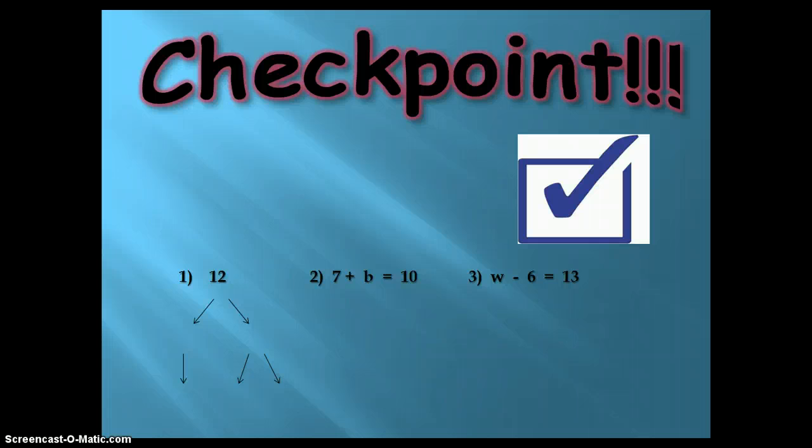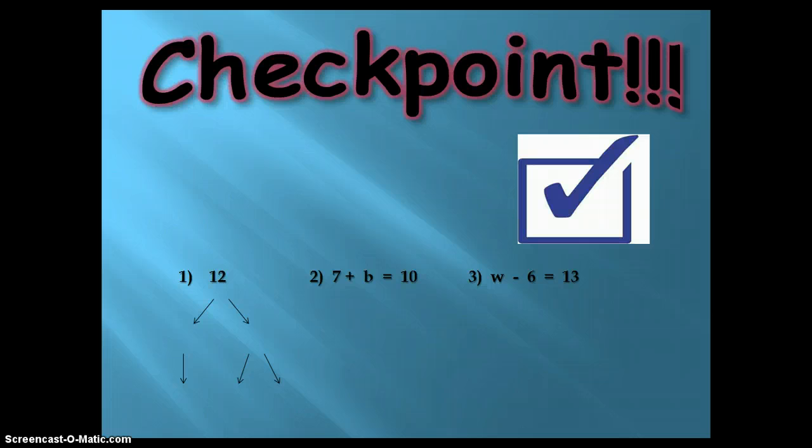Checkpoint! This will assure that all of you know what to do. First, the problem is 12 and you want to find the breakdown of the numbers that equal 12. Second, 7 plus B equals 10. And 3, W minus 6 equals 13. I'll give you some time to figure that out and I will help you when needed.